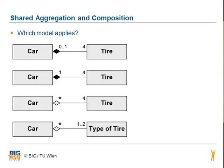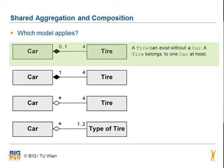Let's look at an example of shared aggregation and composition. Is the first example modeled in the right way? Does a tire exist without a car? Does the tire belong to only one car at most? This model is true. A tire can exist without a car. A tire belongs to one car at most.